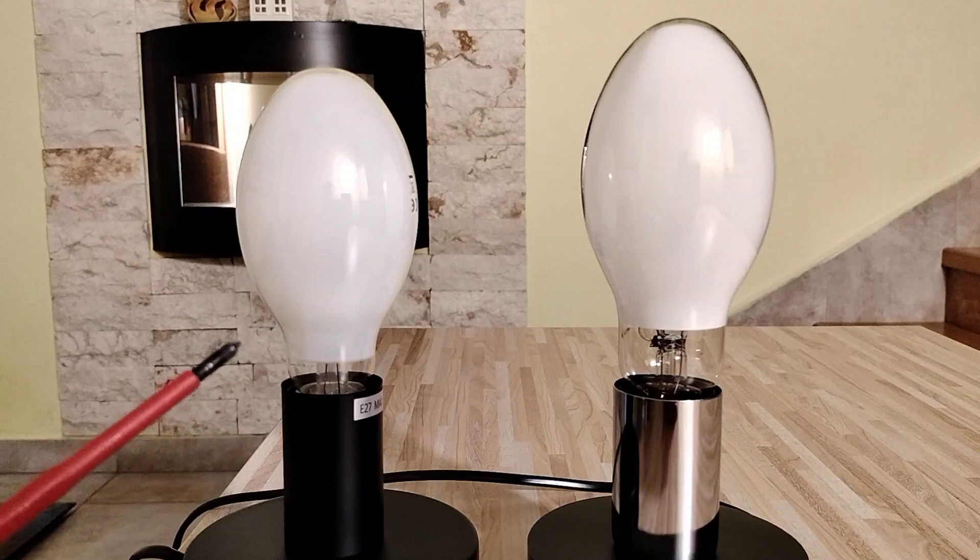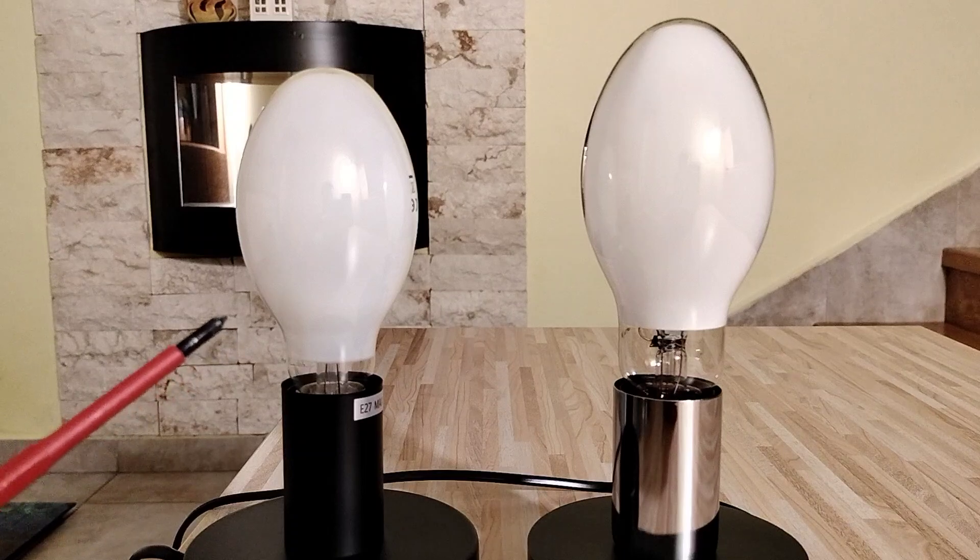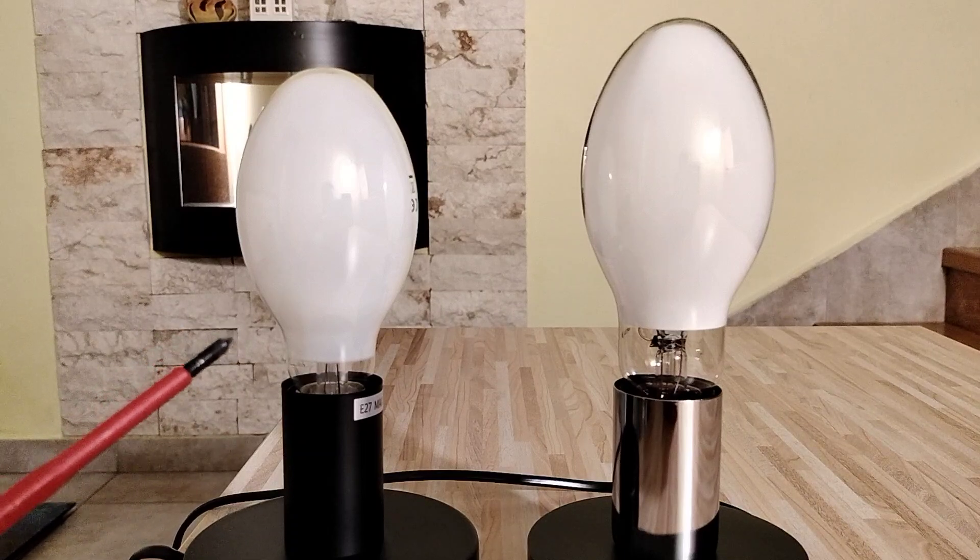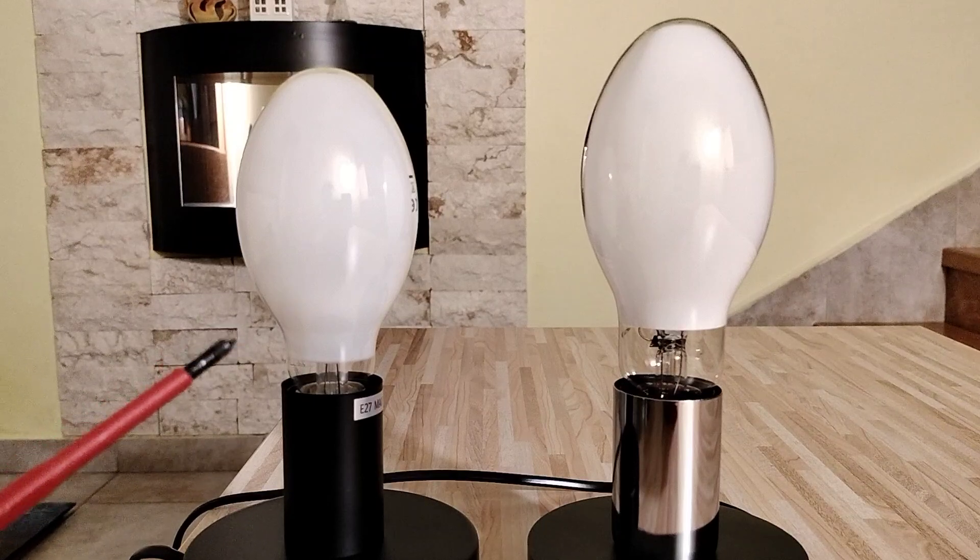This high-pressure sodium lamp has 2000 K, so with this lamp we have very warm white light.